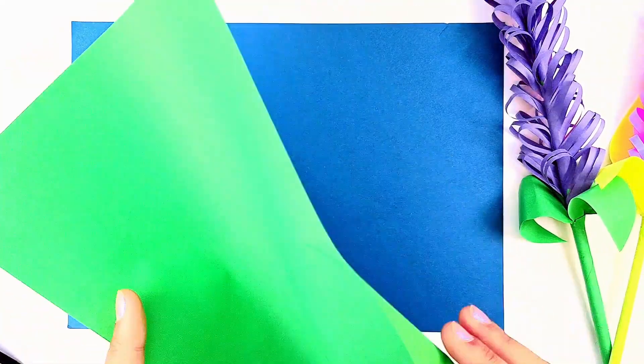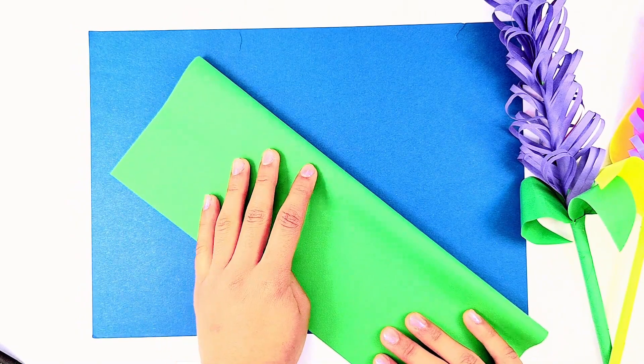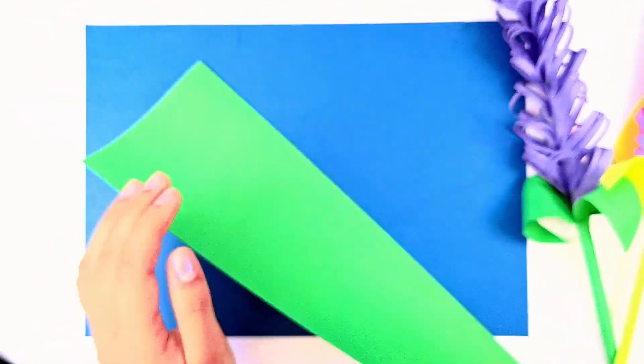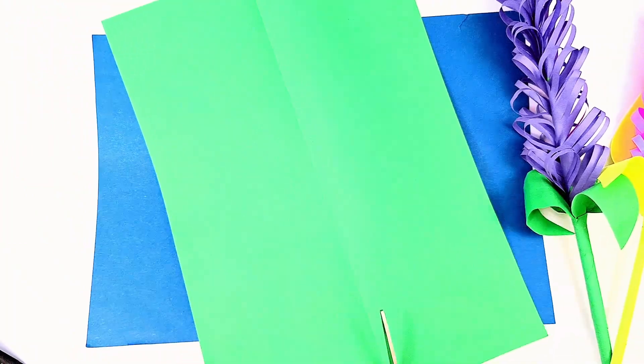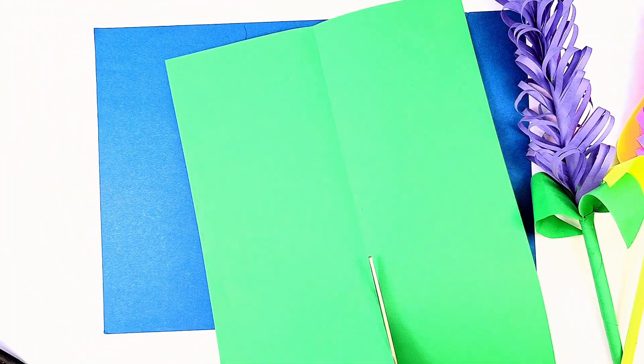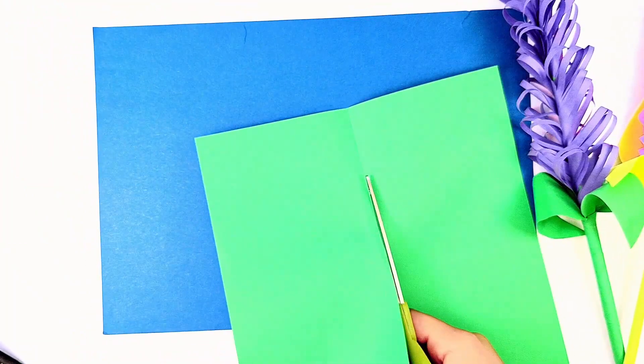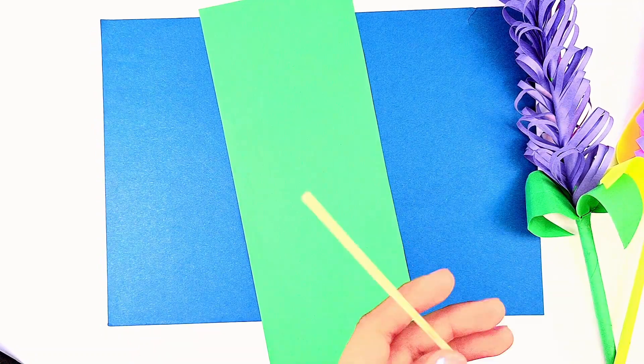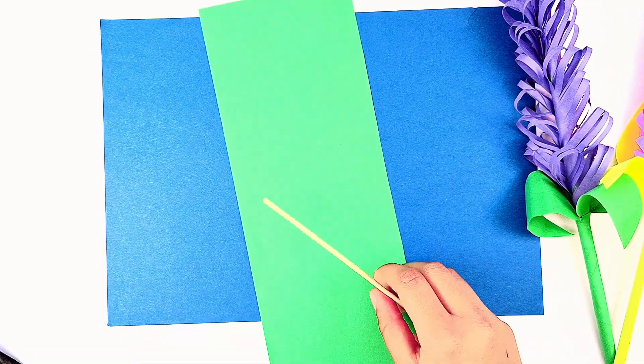Take a green sheet of paper, fold it in half and then cut along the crease. Then wrap the strip of paper around a chopstick.